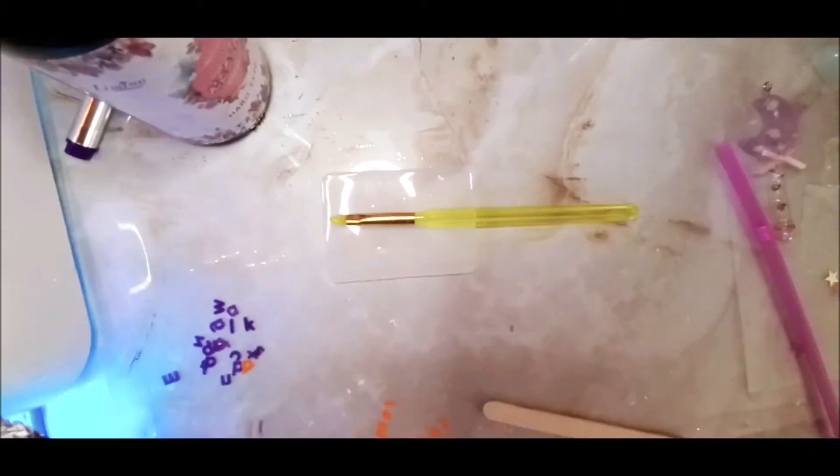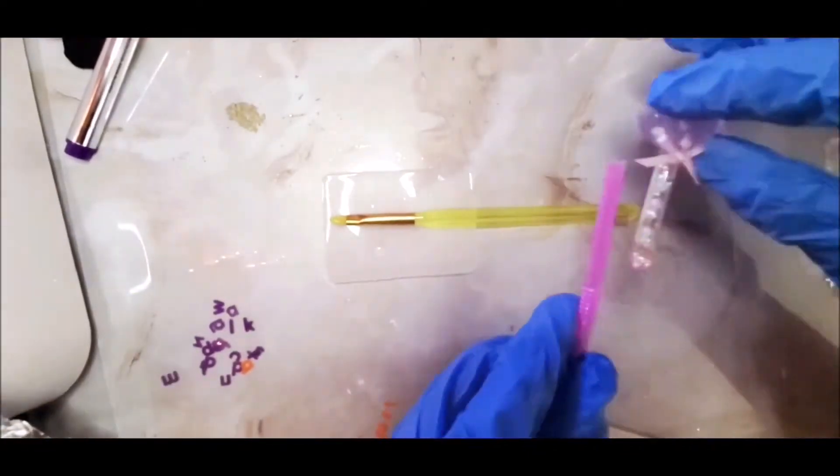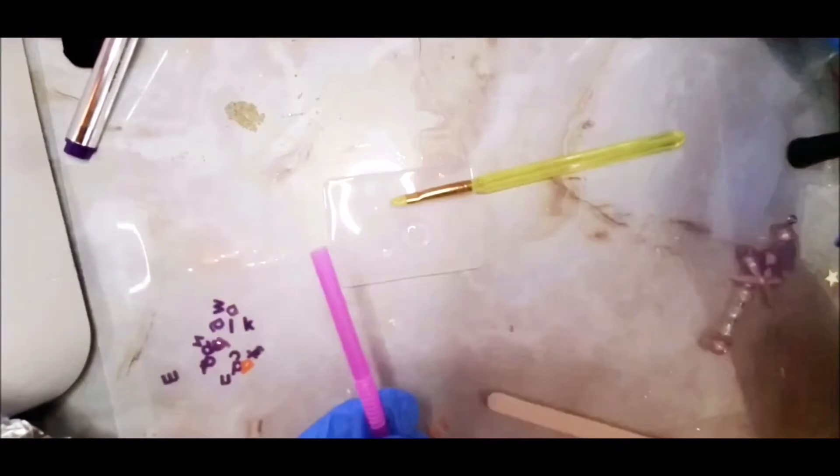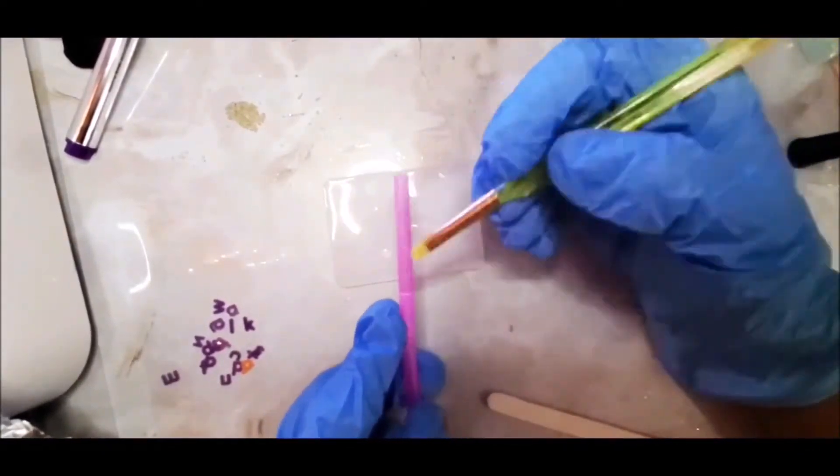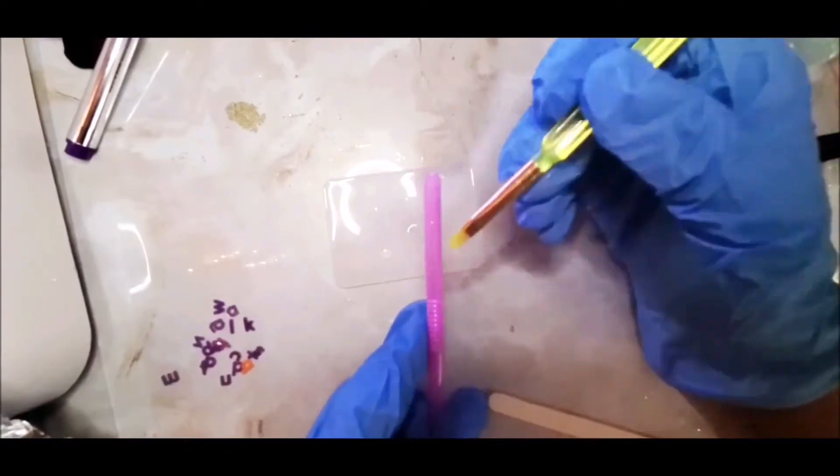This is one that will be available in my shop pretty soon. As you can see I use UV resin when making this craft. I also use a straw. It's a very simple idea. I'm painting on the UV resin onto the straw right now.